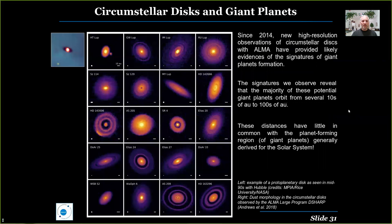We talked about the fact that the final position of giant planets is not necessarily representative of where they formed. The formation of giant and terrestrial planets in the solar system seems to indicate that planets form in the first few tens of AU. However, if we look at other circumstellar disks, this vision can be challenged.